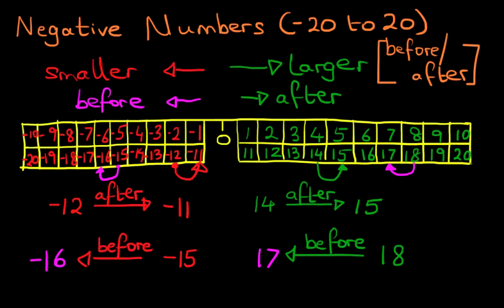So that is how we work out numbers before and after when we are using negative numbers. Picture this number grid in your mind when you are working this out, when you do not or cannot draw the number grid. Once you've got it in your mind, you'll be able to work it out very, very easily.